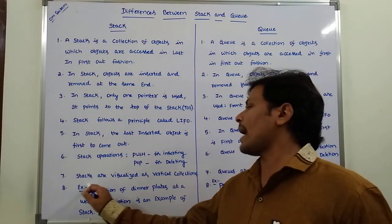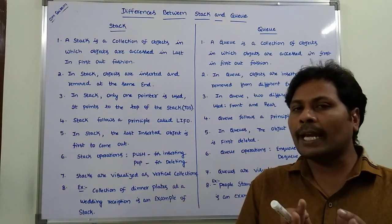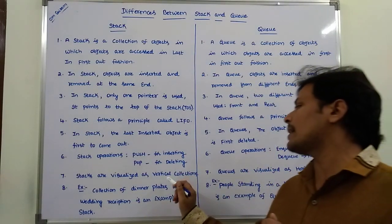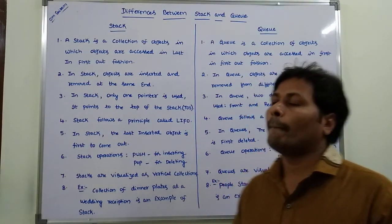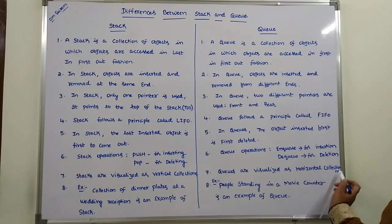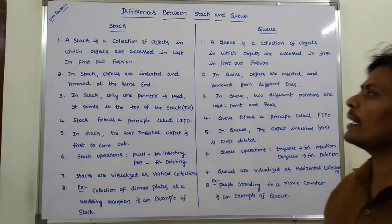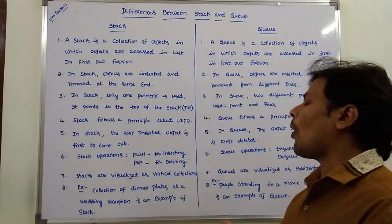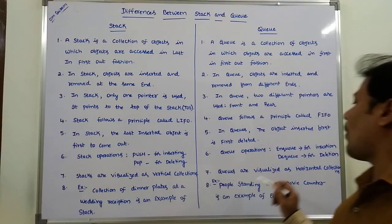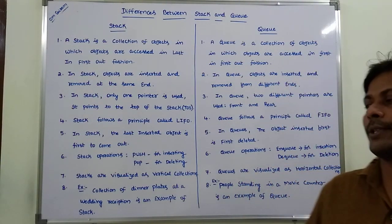Stacks are visualized as vertical collections. Queues are visualized as horizontal collections. The data objects in the stack are visualized as a vertical collection, while the data objects in the queue are visualized as a horizontal collection.